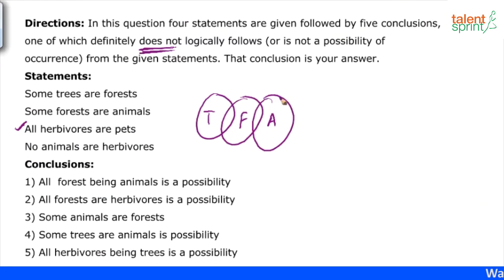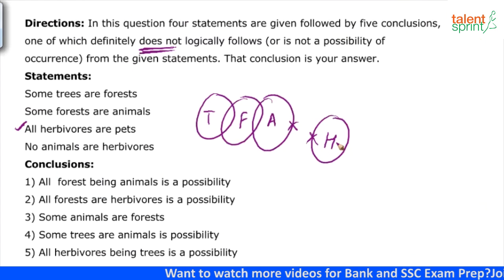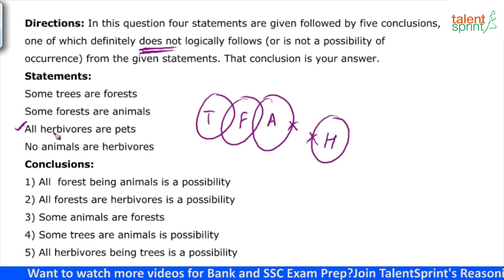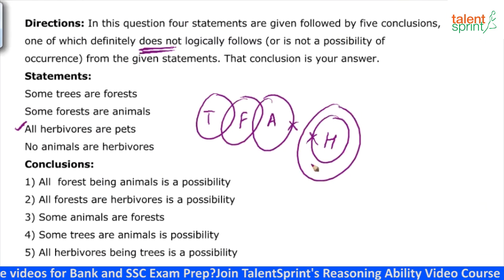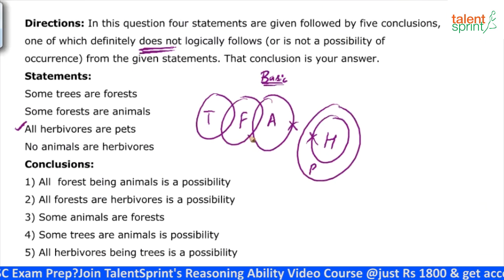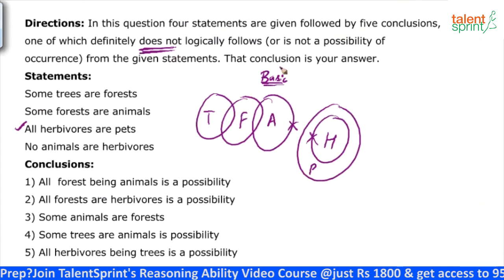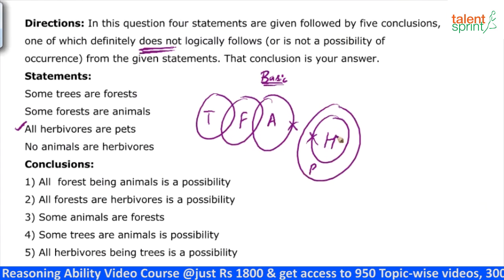The fourth statement says no animals are herbivores. This can be connected with the first two statements because we already have animals in our diagram. No animals are herbivores means these two circles cannot touch each other — animals and herbivores cannot touch each other. Now coming back to statement three which we had kept on hold: all herbivores are pets. Herbivores is already marked, so all herbivores are enclosed within pets. Remember this is a basic diagram, so we ensure minimum overlapping between different sets. The overall basic diagram covers: some trees are forests, some forests are animals, no animals are herbivores, all herbivores are pets.